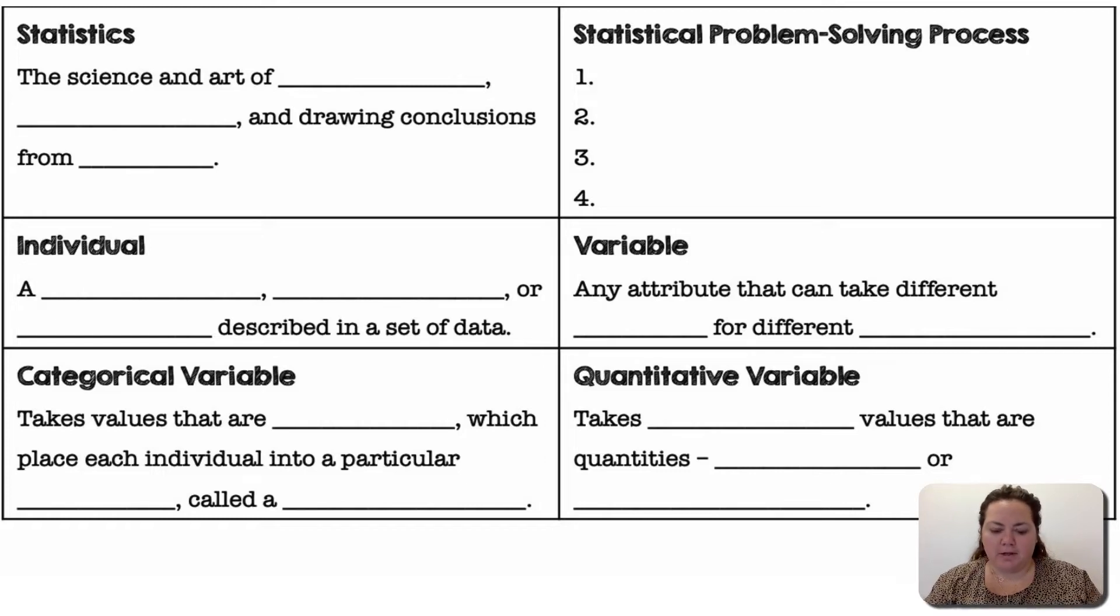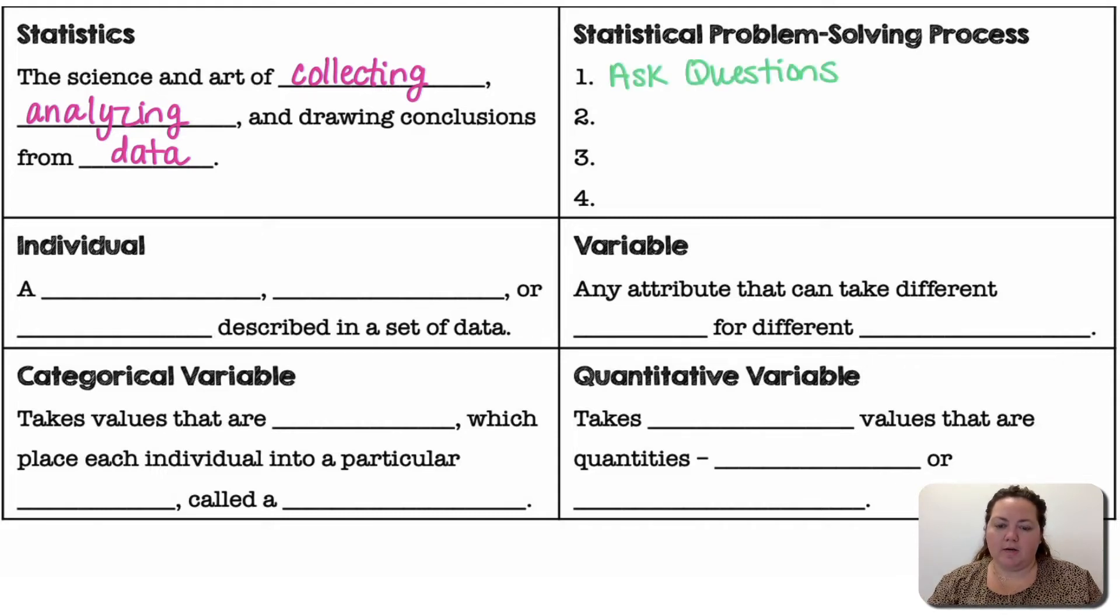All right, so we're going to start off with some vocabulary terms. Statistics is the science and art of collecting, analyzing, and drawing conclusions from data. The statistical problem-solving process that we're going to follow is starting by asking questions, collecting data, analyze the data, and then interpret our results.